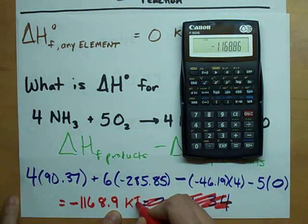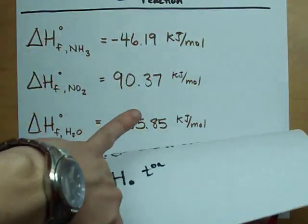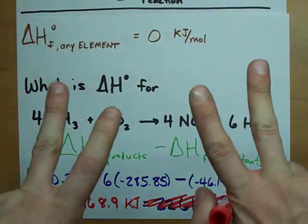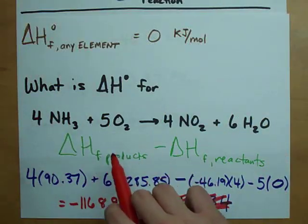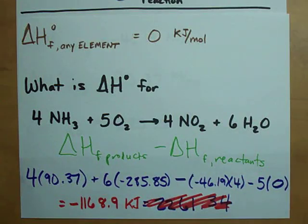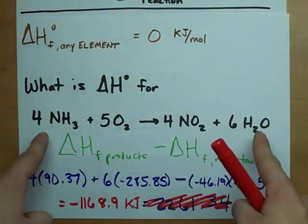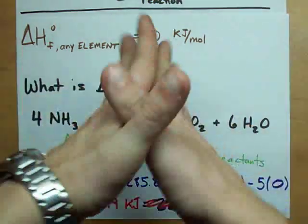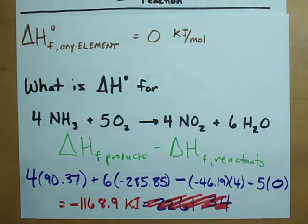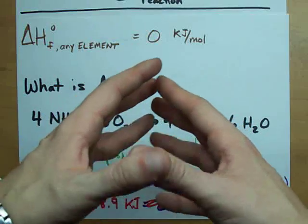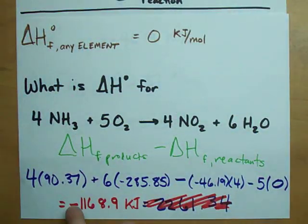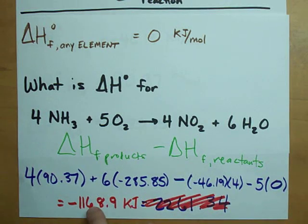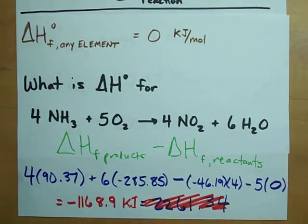Now that's actually in kilojoules. Because these were all in kilojoules per mole, but we've taken care of the per mole bit by multiplying by these coefficients, the 5 and the 4 and the 6 and all that stuff. Every time this reaction happens, every time 4 moles of ammonia and 5 moles of oxygen react to form 4 moles of NO2 and 6 moles of water, whatever you're doing the thing in, the beaker or the vessel or the solution or whatever releases 1168.9 kilojoules of heat. That's quite a bit. It's an exothermic reaction because delta H is negative.